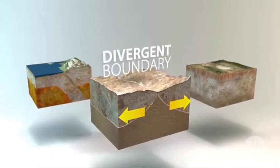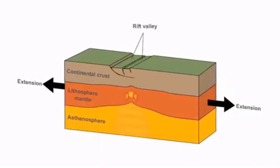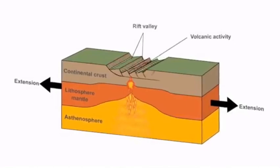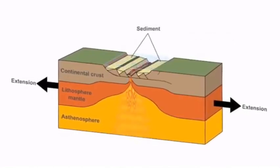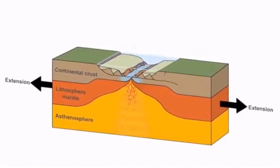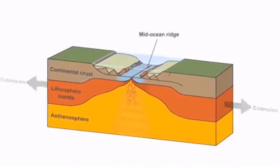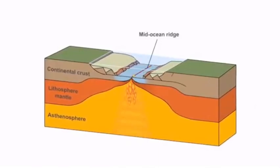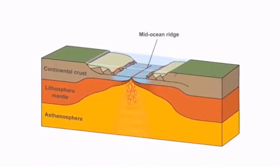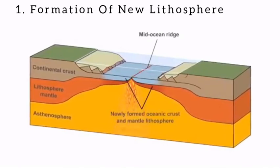Let's move on to divergent plate boundaries. These are plate margins whereby new lithosphere is accreted; therefore they are also referred to as constructive zones. They are plate zones in which plates move apart in a divergent fashion, resulting in upwelling of molten material from the asthenosphere.